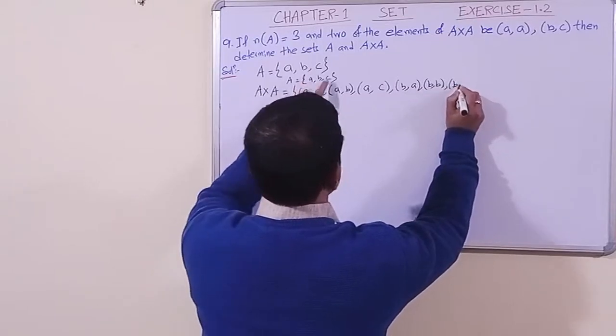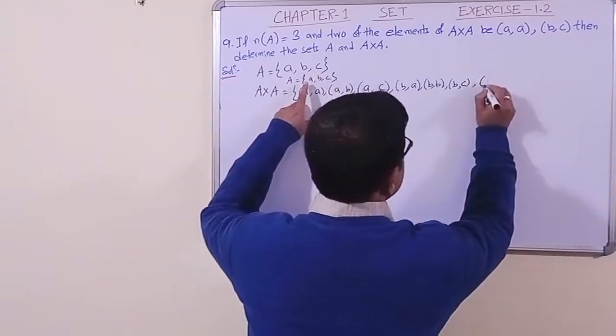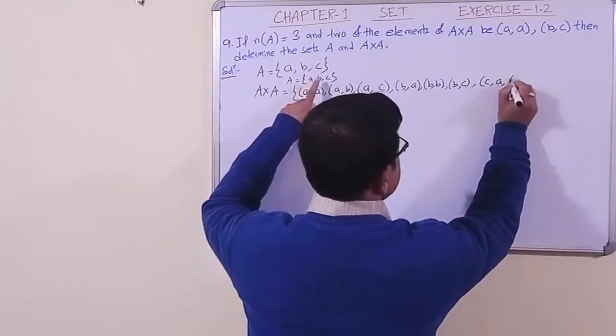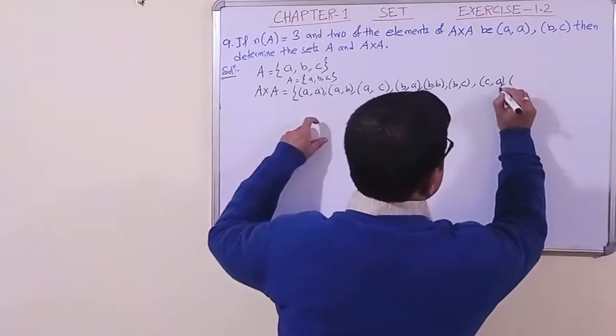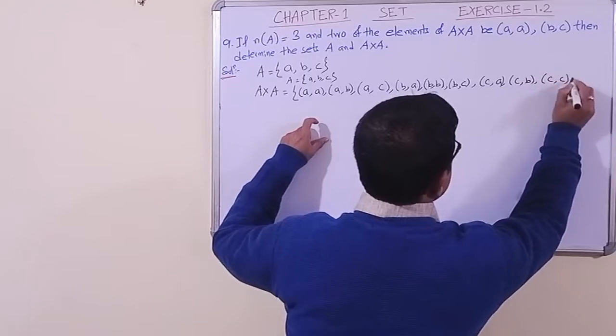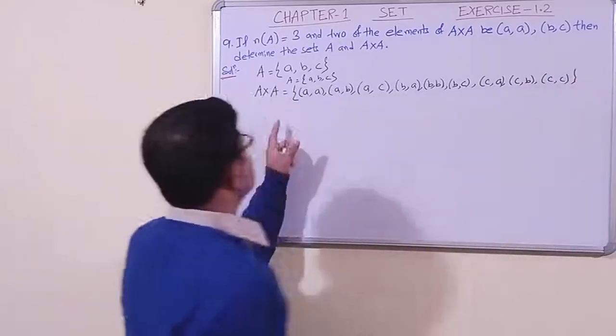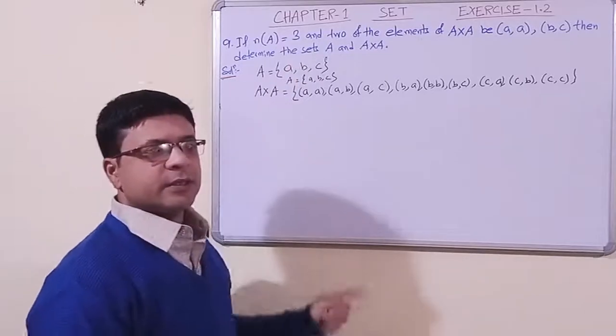...(b, c), then with c. Let us do c with a, then with c and b, then (c, c). Okay, in this way we can find the set A and the set A cross A. Okay students.